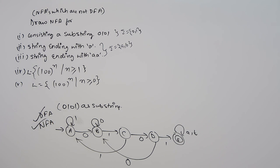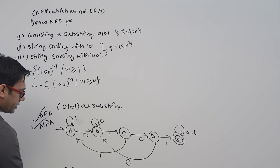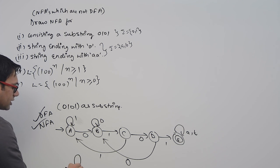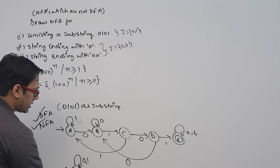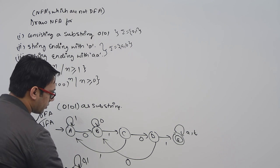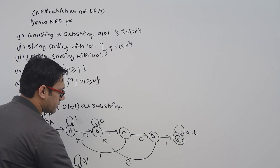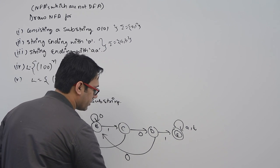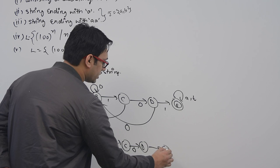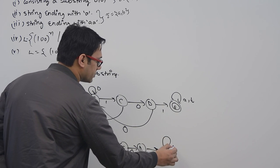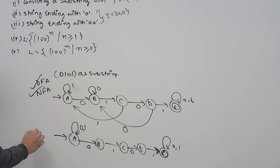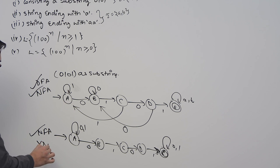Now if you just draw an NFA, how can you do it? Initial state is A. In the beginning you can get any number of zeros or ones — it doesn't matter. But as soon as you get 0, then 1, then 0, then 1, you go to state E and you accept it. After that you can get any number of 0s and 1s. This is representing an NFA for the given language which is not a DFA.